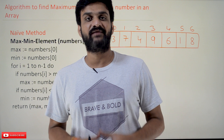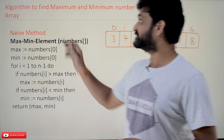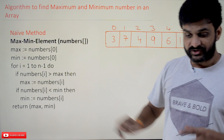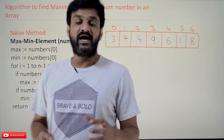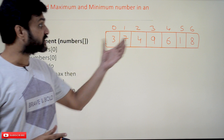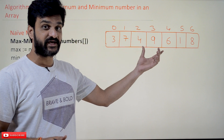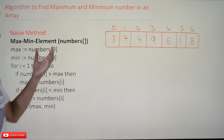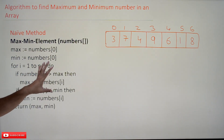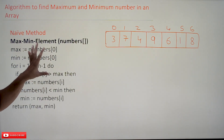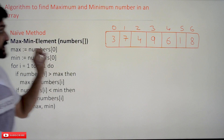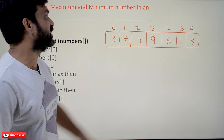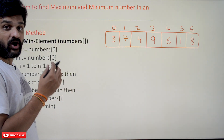Hi, welcome to Learning Monkey. I'm Vikram. In this class we'll try to understand the algorithm to find the maximum and minimum number in an array. This is a very simple algorithm. First we will try to understand the working mechanism using this array, and next we will try to understand the same concept using the algorithm for finding the maximum and minimum.